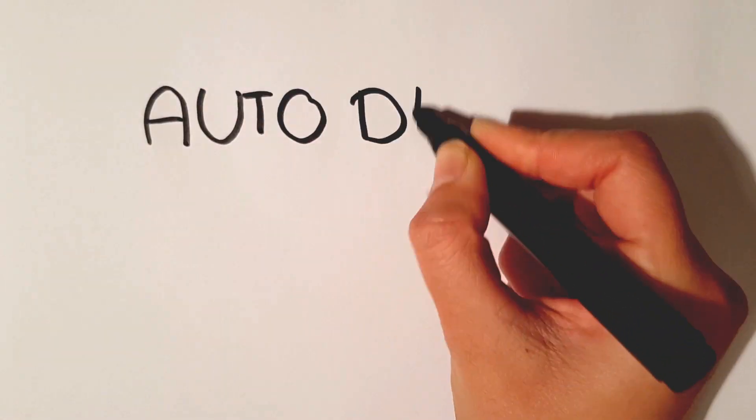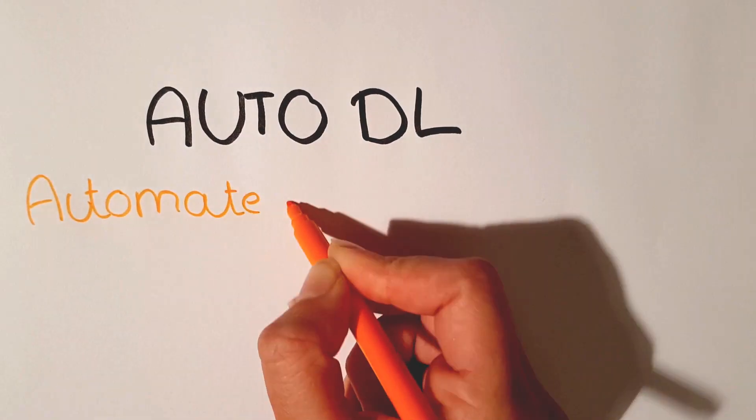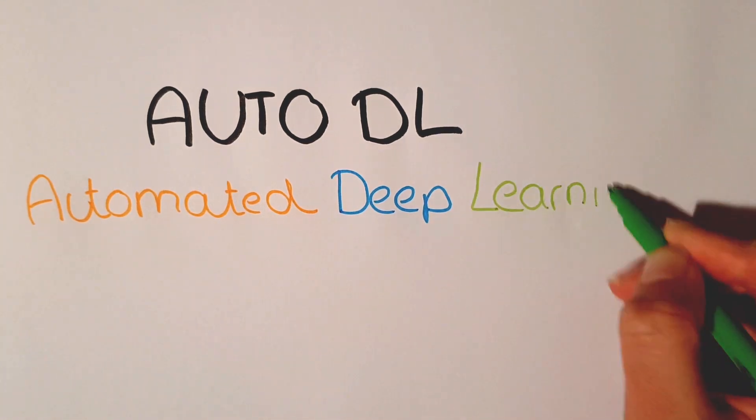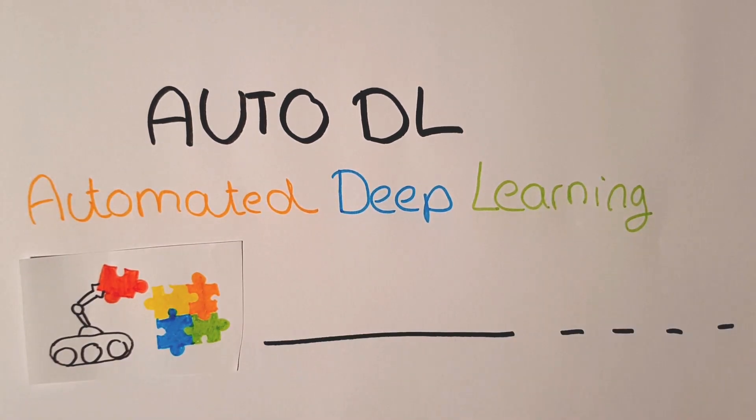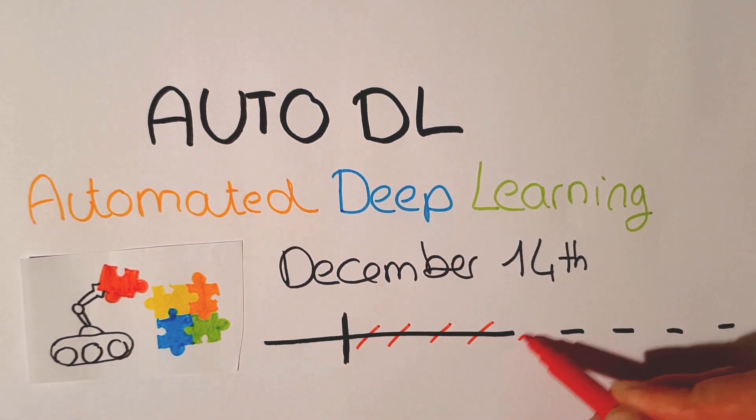We are introducing AutoDL, a competition in automated deep learning as part of the official selection of NeurIPS 2019. The challenge will be launched on December 14th and will remain open for several months.